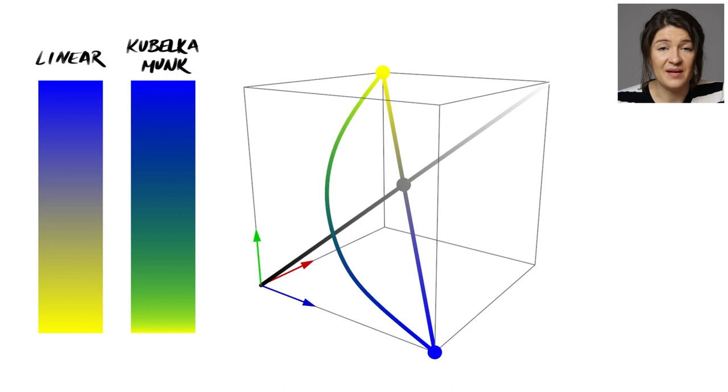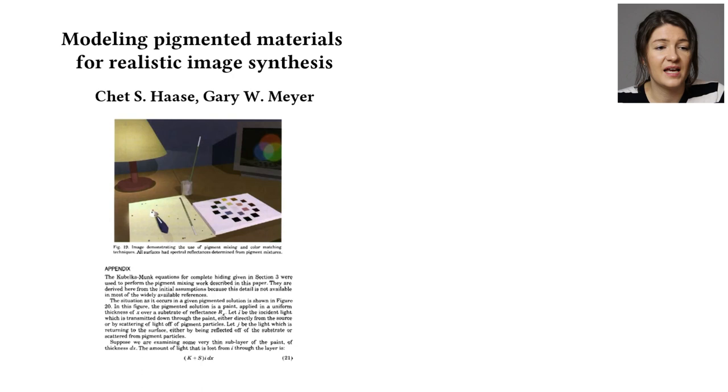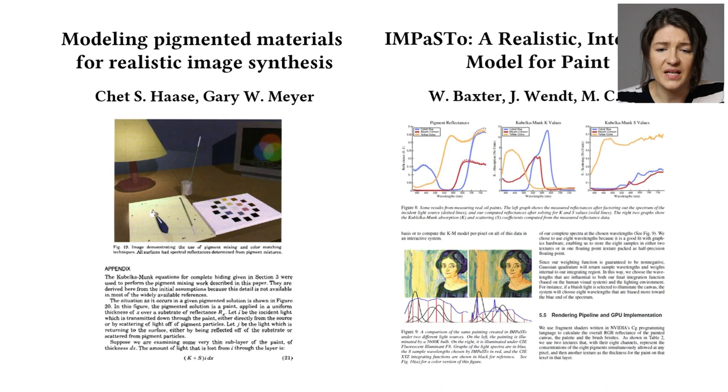And the research on how to actually implement or integrate Kubelka-Munk into digital painting has been done. Let's mention Haase and Meyer, who introduced pigment mixing into computer graphics in the early 90s. And then William Baxter, who did seminal research on simulating oils and acrylic paints. Strangely enough, it has never been picked up by graphic software outside research. And even three decades since the publication of Haase and Meyer, blue and yellow make gray in painting software. Why?